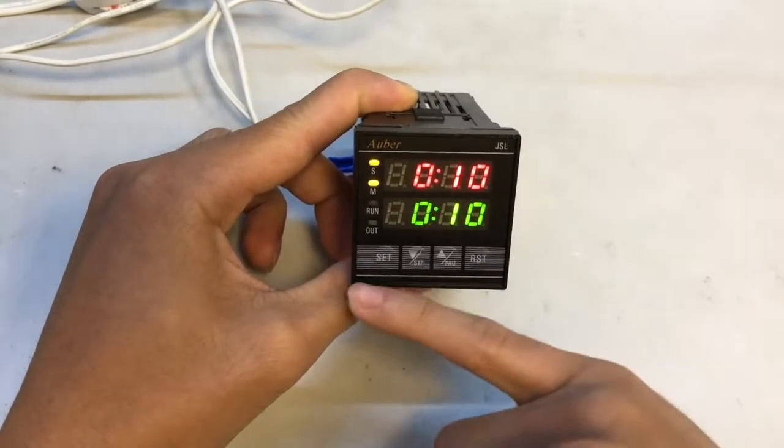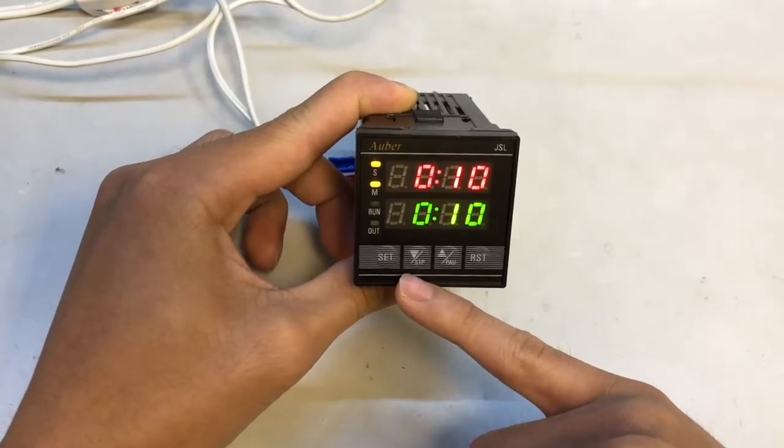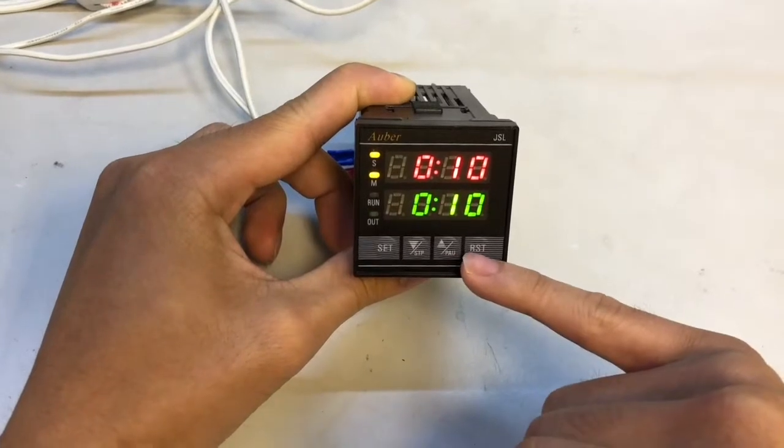There are four buttons on the bottom keypad here: set, stop or down arrow, pause or up arrow, and reset RST.